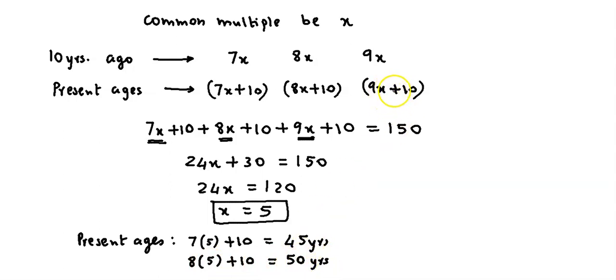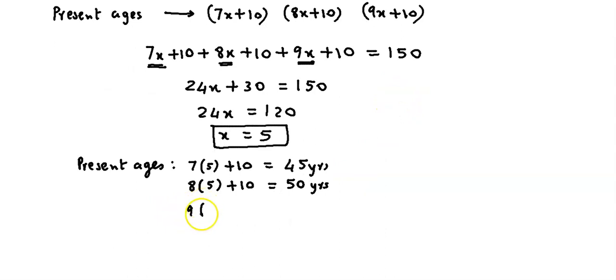And third person's age is 9x plus 10, 9 into 5 plus 10, that is 45 plus 10, which is 55 years. So these are the present ages.